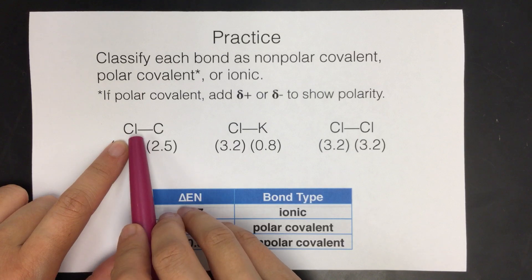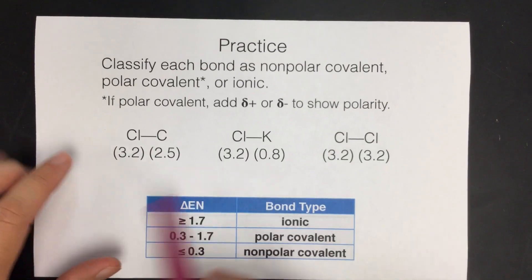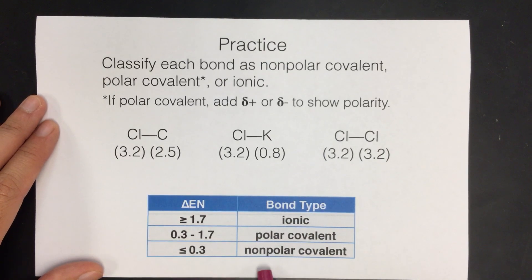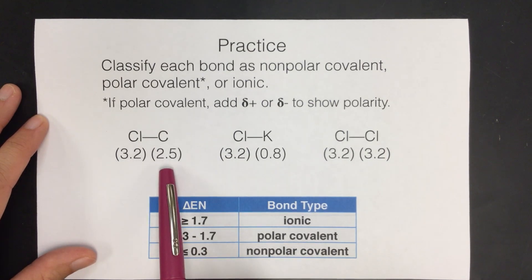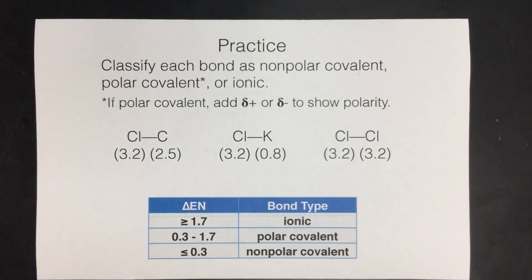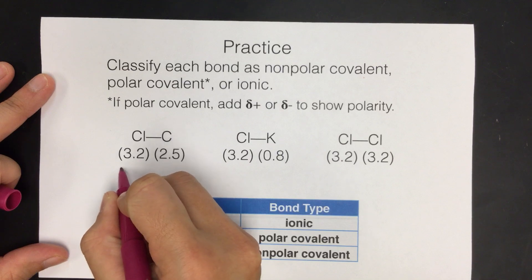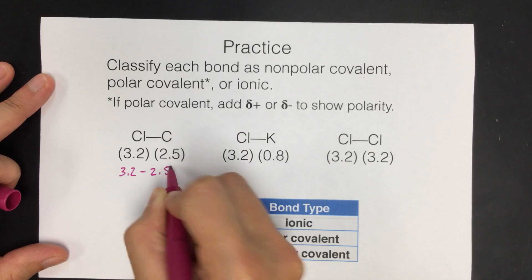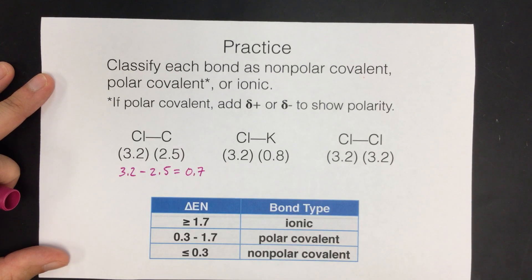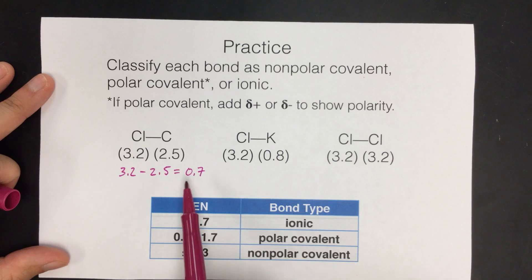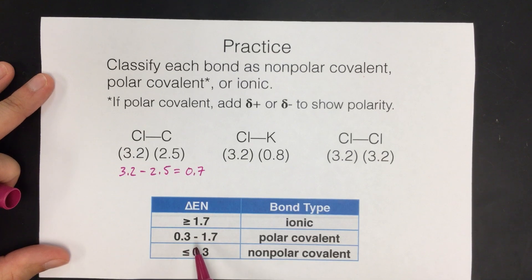The first one is Cl and C — chlorine and carbon bonded together. The electronegativity values are given: chlorine is 3.2, carbon is 2.5. Always start with the larger number and subtract. We get a difference of 0.7. So we find where 0.7 falls in the table — it's between 0.3 and 1.7, so it's a polar covalent bond.